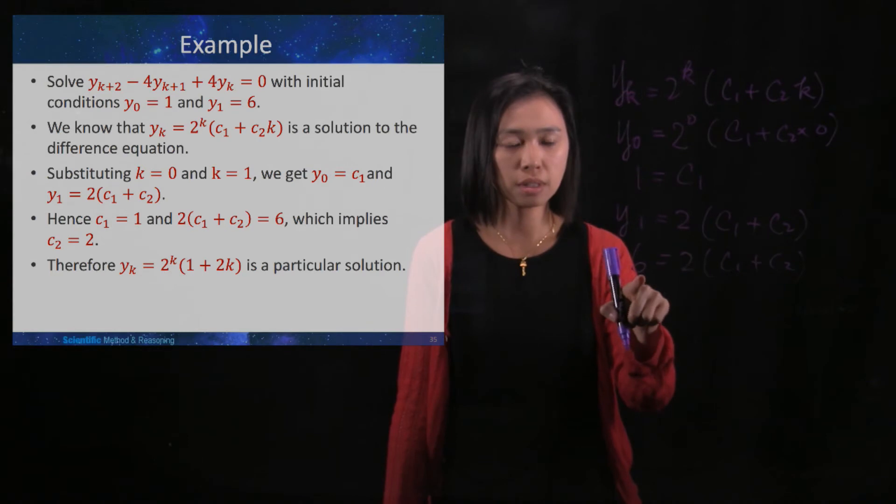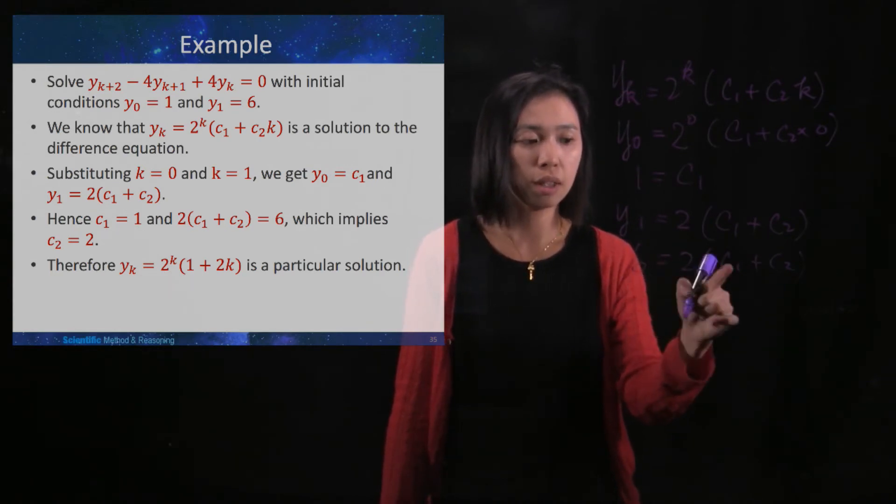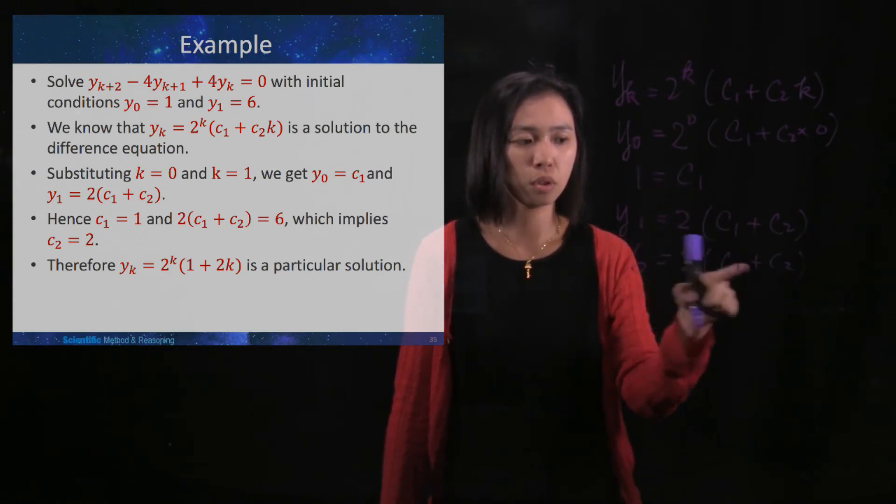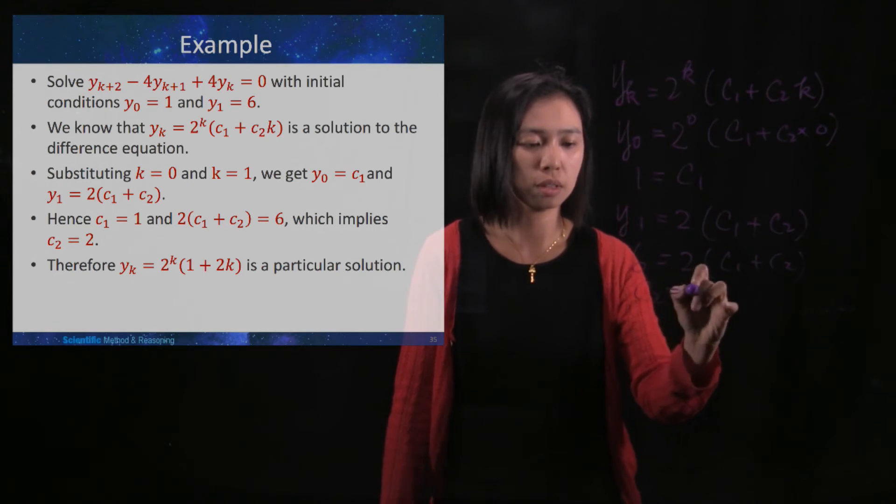So 6 divided by 2, you've got 3 here. And then c_1 is 1, so c_2 is 2.